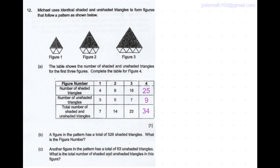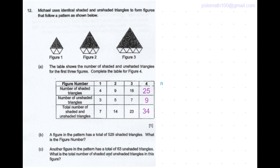Coming to part B of the question. A figure in the pattern has a total of 529 shaded triangles. What is the figure number? Let's derive the formula for figure n.